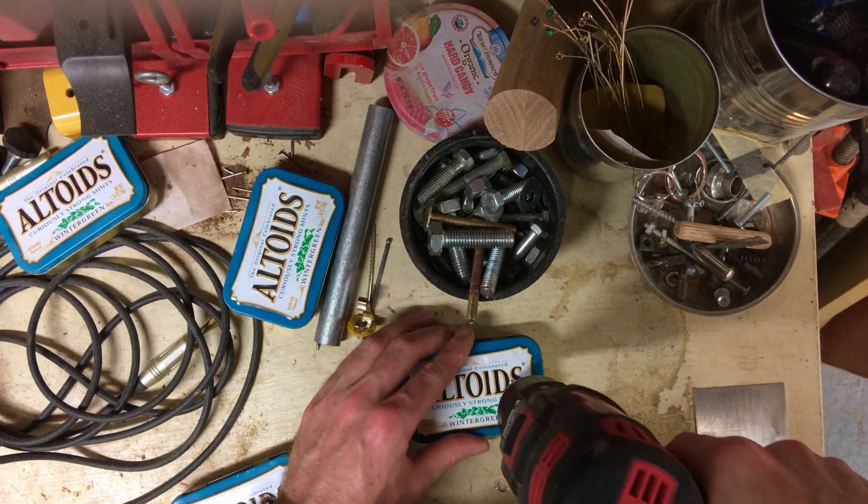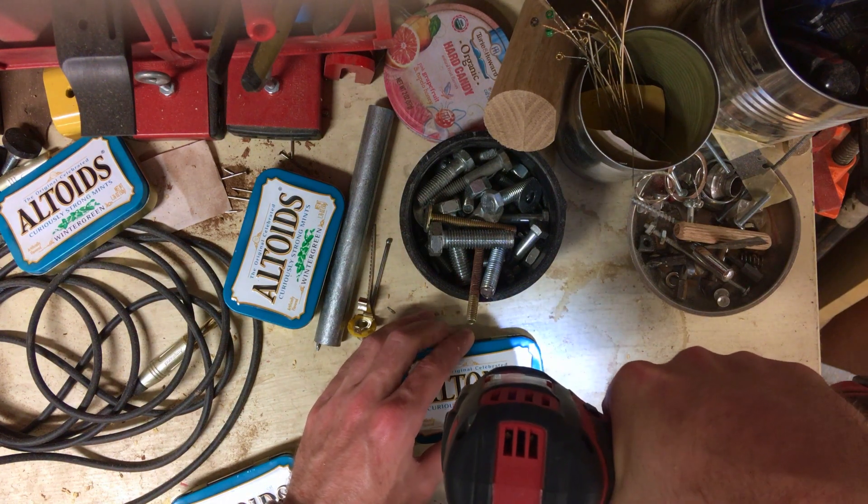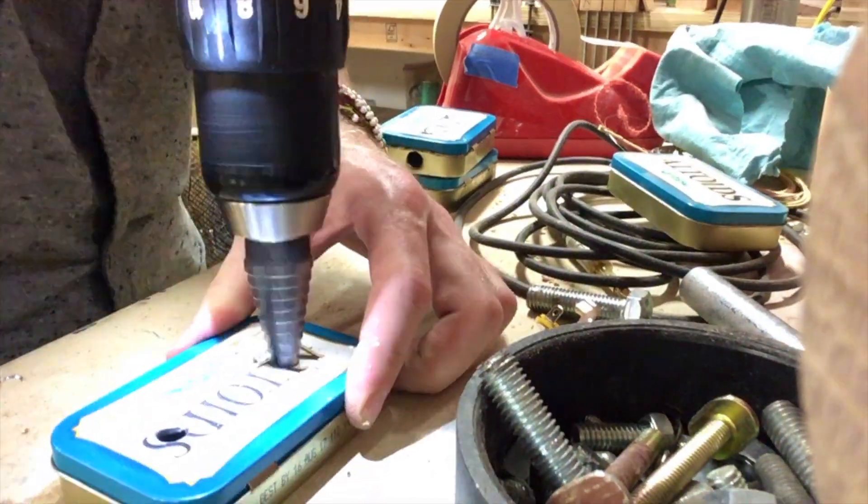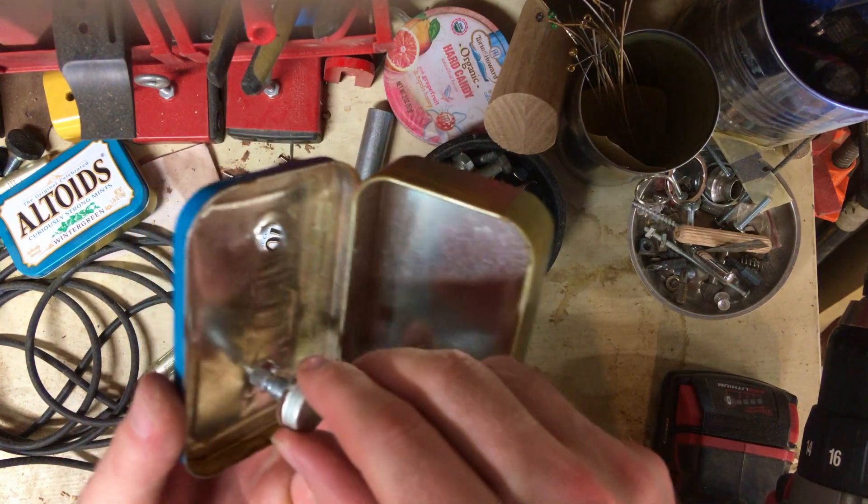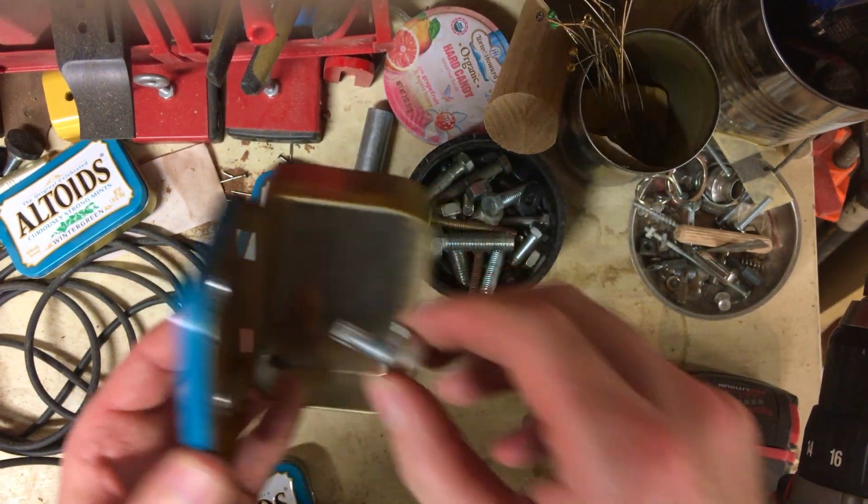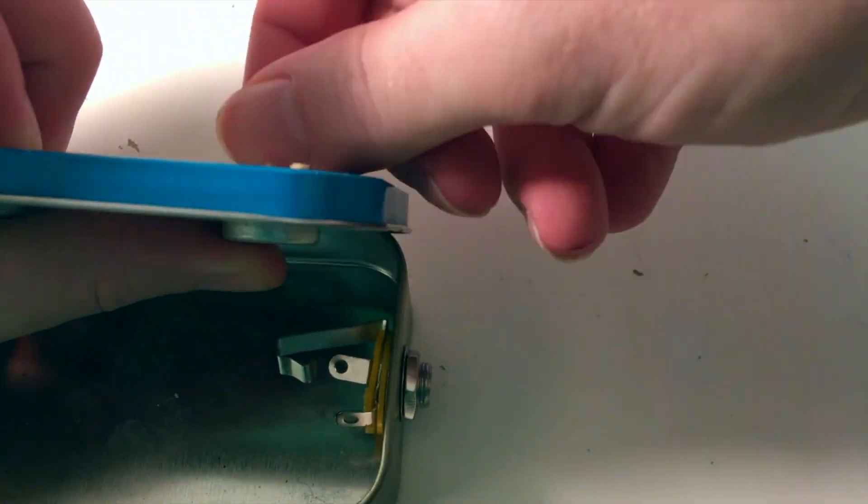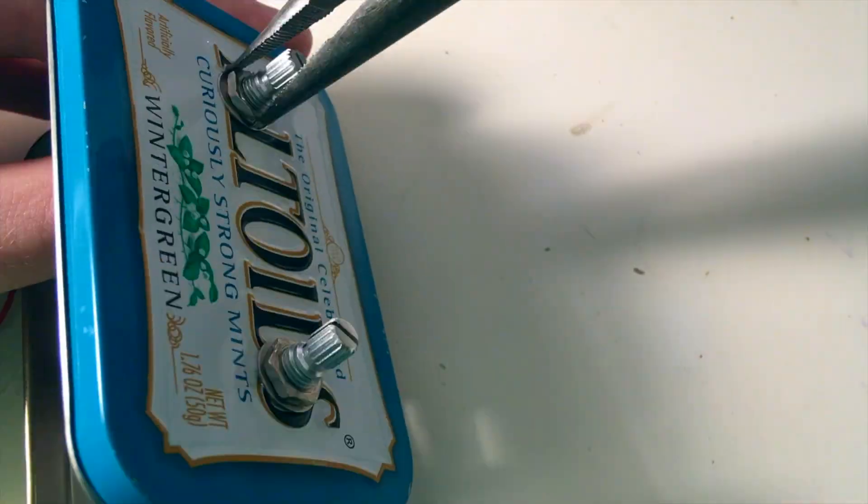So now you gotta drill some holes in your enclosure. I'm using an Altoids tin because I'm classy. It's a good idea to bring components with you so that you can test as you're drilling these holes that they're big enough. Get those components screwed in there.